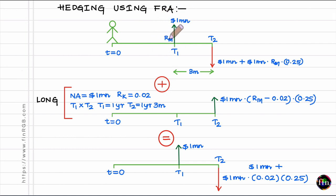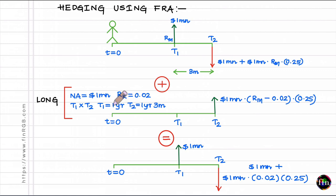Since my original exposure to R_M is a short exposure, I need a hedge that gives me an offsetting gain if R_M goes up. For that purpose, let me customize a forward rate agreement with a notional of 1 million dollars. This FRA is a T1 × T2 FRA where T1 is 1 year and T2 is 1 year and 3 months. Based on the term structure prevailing today, the fair forward rate is 2%. Because I need an offsetting gain when R_M goes up, let me enter into a long position in this FRA.